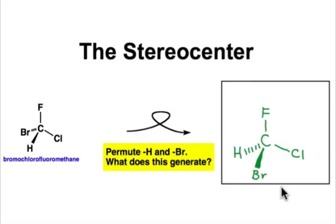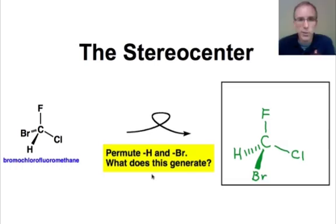I'll leave it as an exercise for you to convince yourself that the new structure is not superimposable on the original, but that these two are related as mirror images. Non-superimposable mirror images are what we know as enantiomers. Since the process generated a new stereoisomer, we've met the definition of a stereocenter.